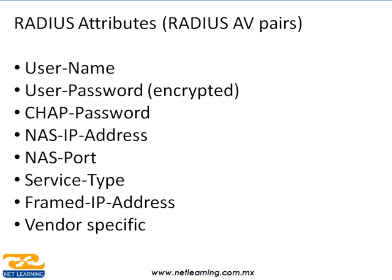Los atributos de RADIUS son diferentes a los de TACACS y también se les conoce como AVPairs. Entre los atributos comunes de RADIUS tenemos: USER NAME, USER PASSWORD, CHAP PASSWORD, NAS IP ADDRESS, NAS PORT, SERVICE TYPE, FRAMED IP ADDRESS, y VENDOR SPECIFIC. Este último es muy interesante porque cada organización que vende equipos de redes puede hacer sus propios AVPairs de RADIUS para cosas específicas. Para el examen debemos saber que puede haber atributos específicos para Cisco o para cualquier otro vendor como Juniper.